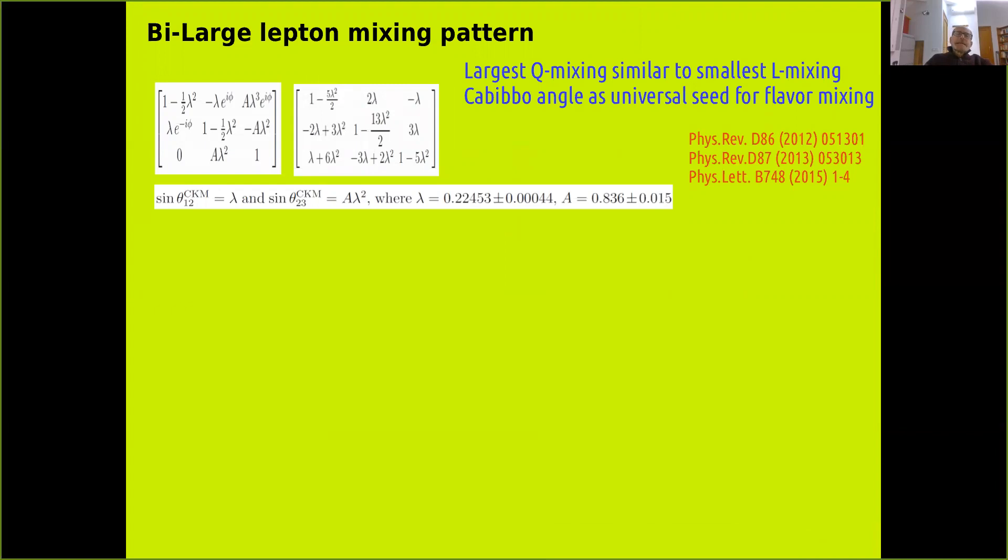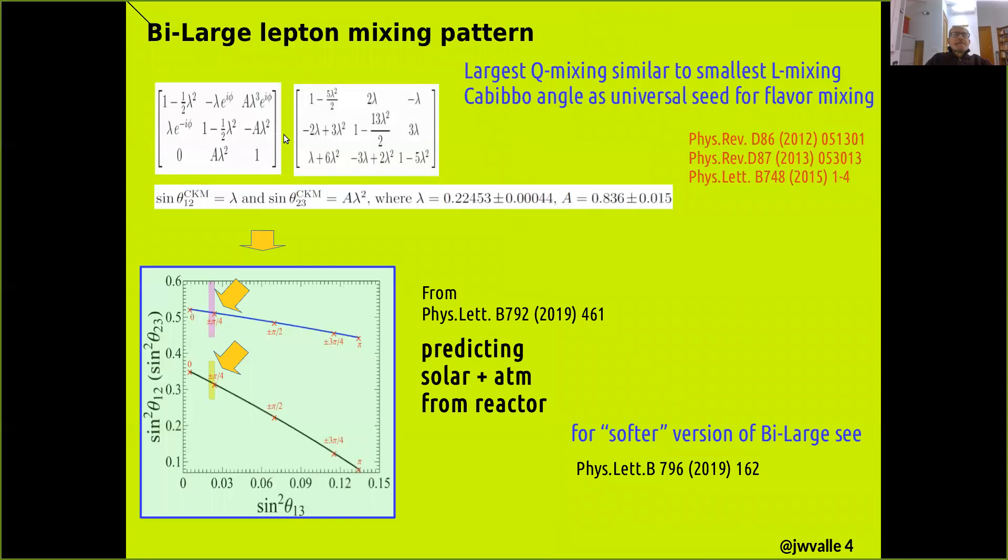Rather, I move directly to an alternative lepton mixing pattern, namely the bi-large, developed in Valencia by exploiting the idea that the largest quark mixing, namely the Cabibbo angle, is similar in magnitude to the smallest of the lepton mixing angles, namely the reactor. This way one can express the lepton mixing as a product in powers of this well-measured small parameter lambda.